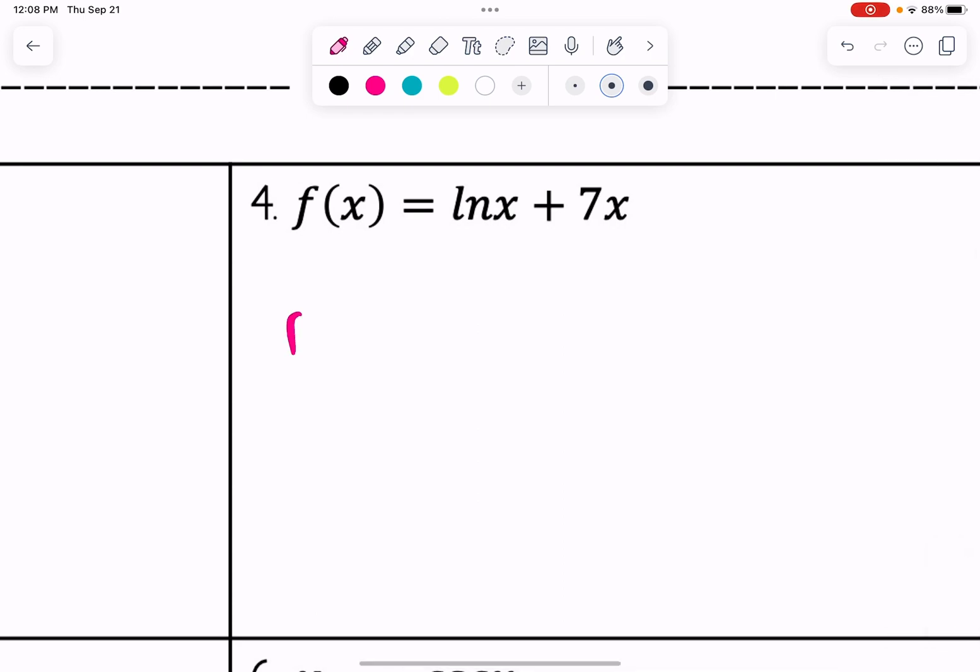Number four, the derivative of ln of x plus 7x is 1 over x. And we've previously learned power rule. The derivative of 7x is simply 7.